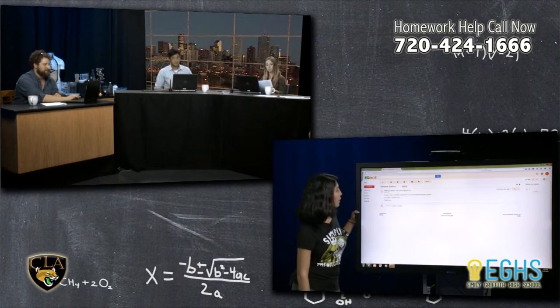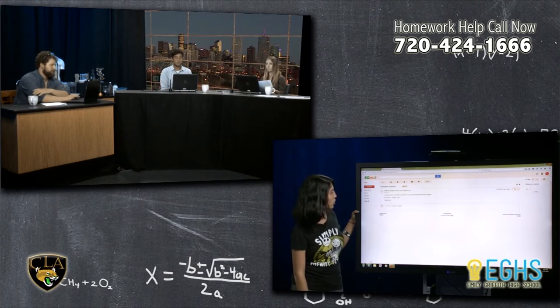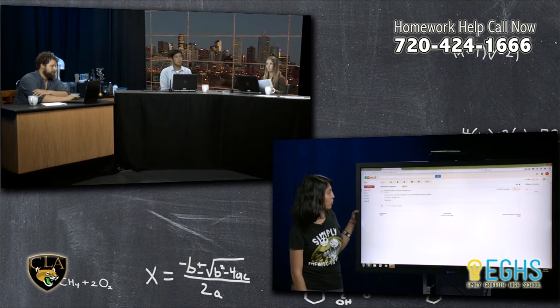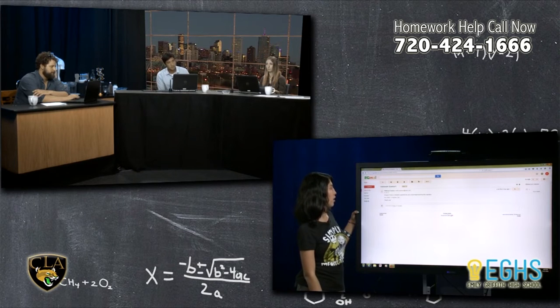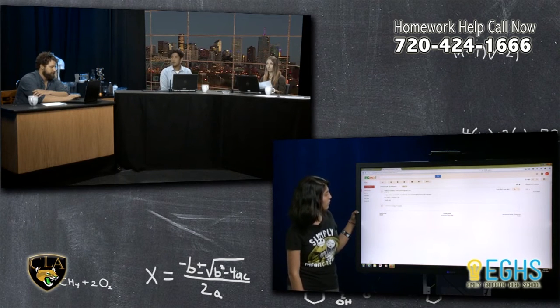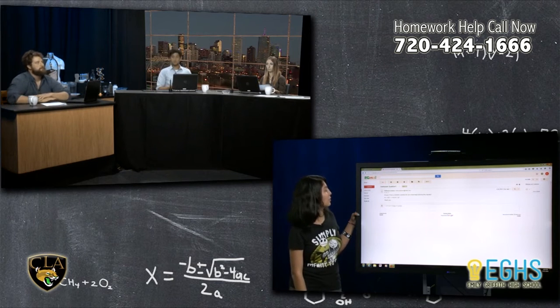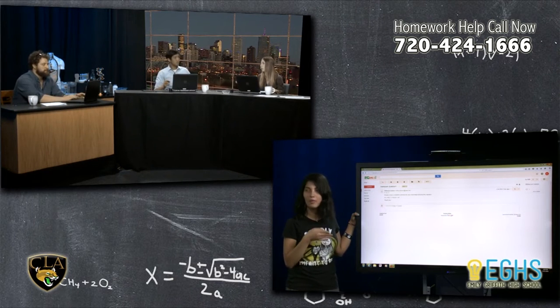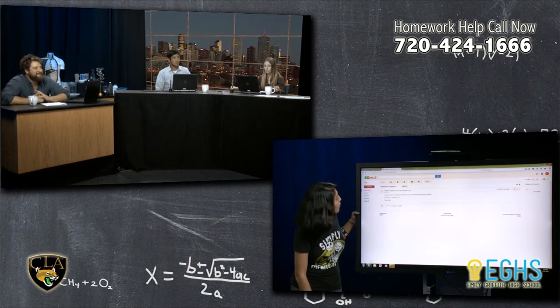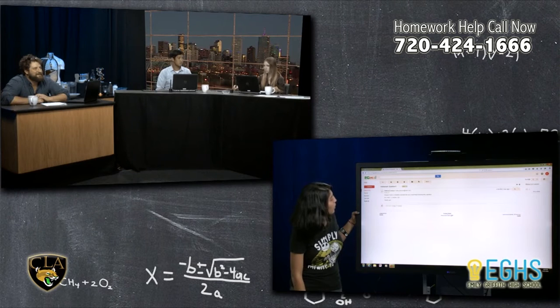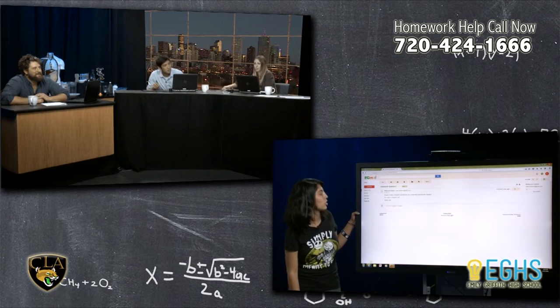Okay, so we have a science question from Rebecca, and she says, hi guys, I have a chemistry question for you. I need help balancing this equation, and the equation is Fe plus H2O, and then a little arrow. I'm going to need one of you guys in a second. Then it converts to Fe3O4 plus H2.